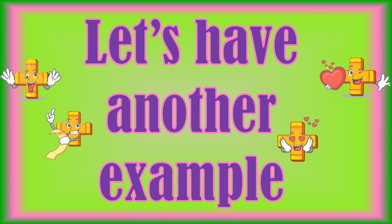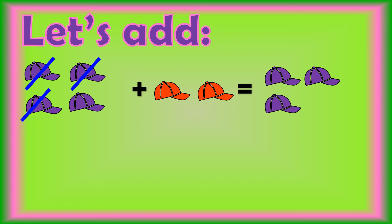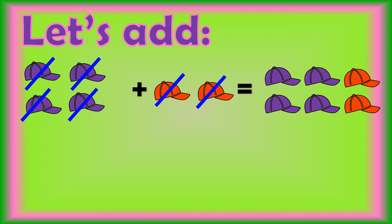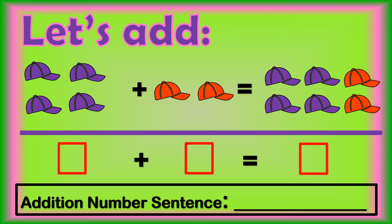Let's have another example. Let's count the purple and orange caps. 1, 2, 3, 4, 5, 6. There are 6 caps in all. Let's write an addition number sentence for this example.